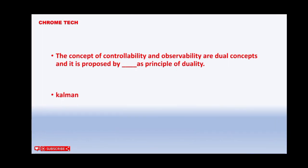The concept of controllability and observability are dual concepts and it is proposed by as principle of duality. Kalman is the correct answer.